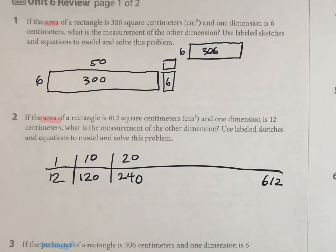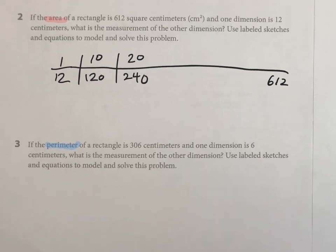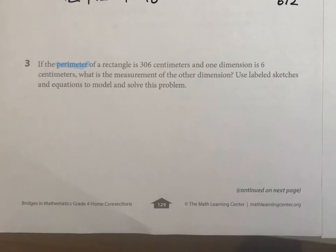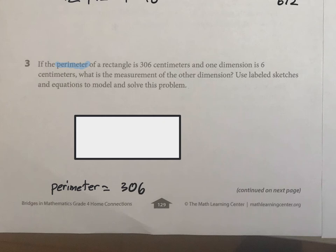But down here is where we have perimeter. Let me scroll down again. Here it is. The whole distance around this guy is 306, and I know one dimension is 6. So this dimension is 6, this dimension is 6.